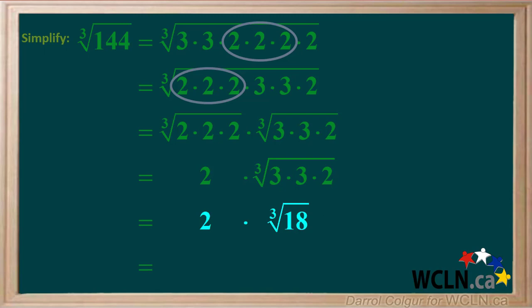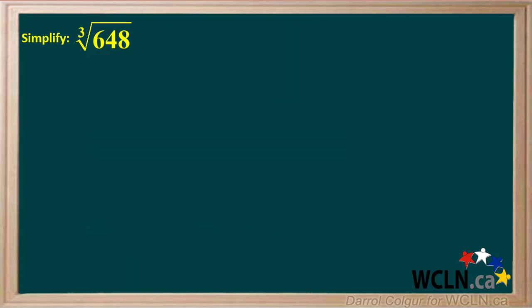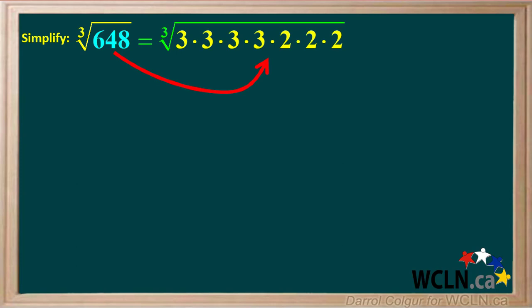So we're left with 2 times the cube root of 18. The cube root of 144 can be simplified to 2 times the cube root of 18. Now we'll do one more example: we're asked to simplify the cube root of 648. 648 can be factored to the prime numbers 3 times 3 times 3 times 3 times 2 times 2 times 2.